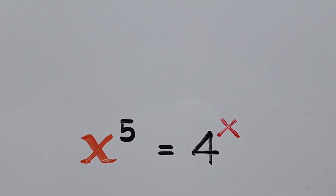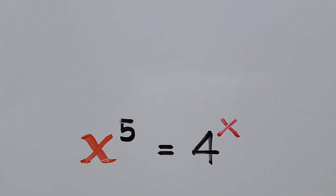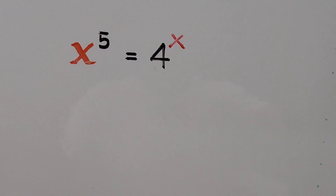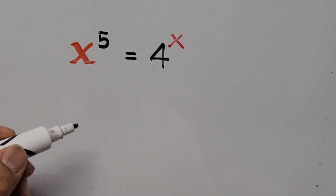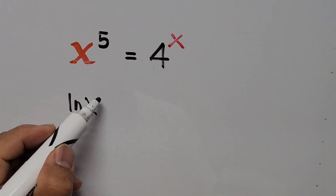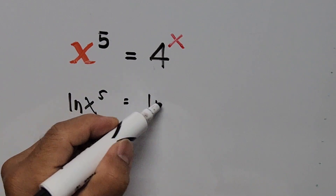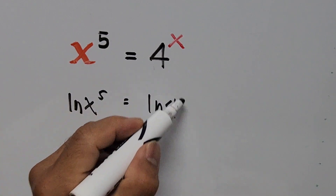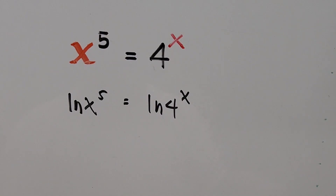What do you think will be the first step to solve this equation? Can we take the logarithm of both sides? The answer is yes. So let's go ahead with our solution — we take the natural logarithm on both sides, giving us ln of x to the power of 5 equals ln of 4 to the power of x.